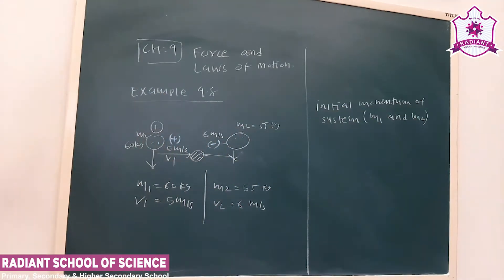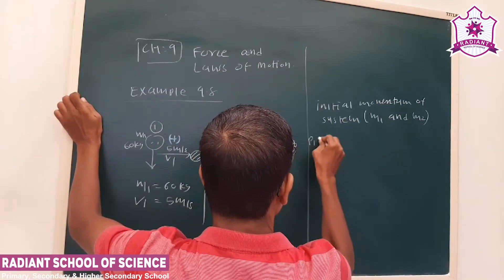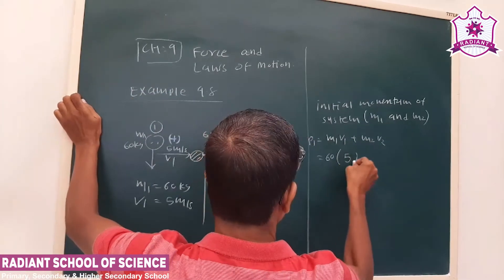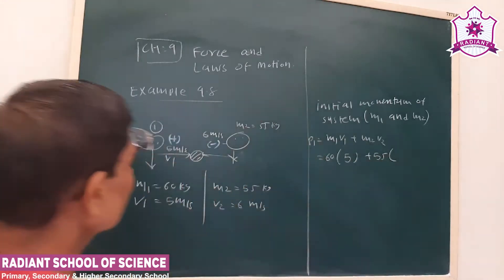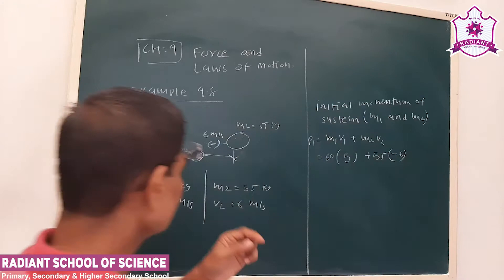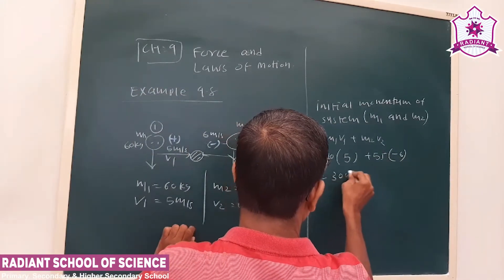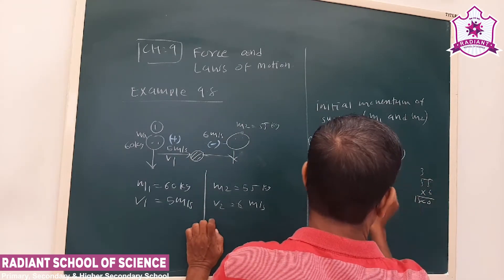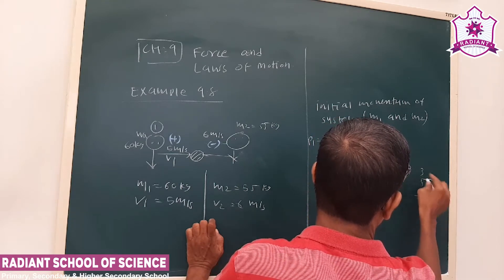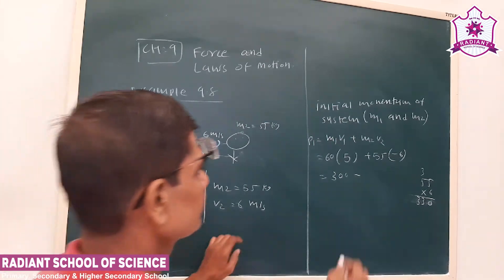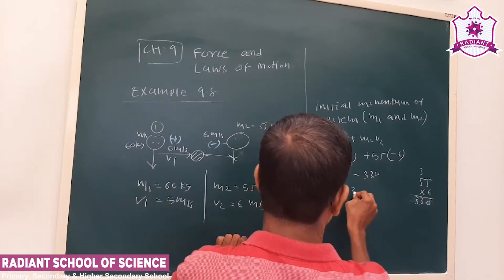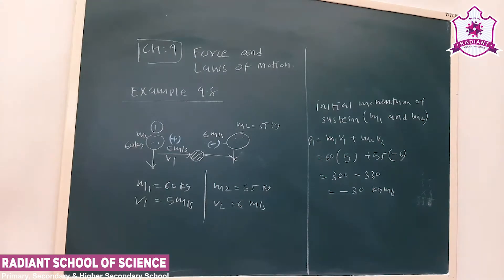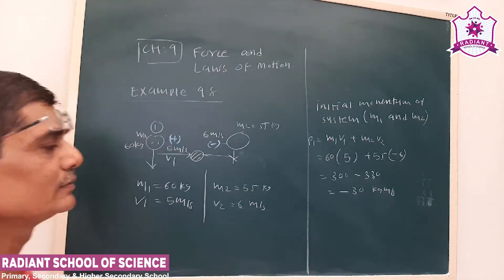Our system is made of two masses M1 and M2. The initial momentum P1 is M1V1 plus M2V2. V1 is 5, M2 is 55, and V2 we take as negative because it is moving in the opposite direction. So the initial momentum of the system is 300 minus some value, giving us the net initial momentum.